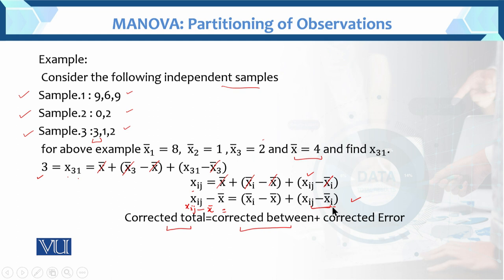Further, we take the sum, square these terms, and we call them: corrected total sum of squares, corrected between sum of squares, and corrected within sum of squares. We are now going to build the MANOVA from this.